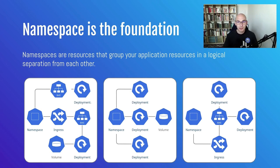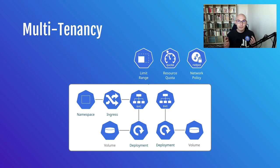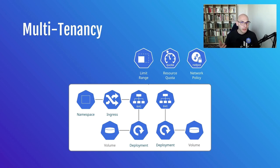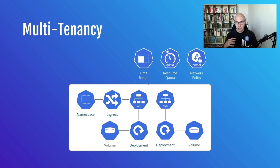We all know Kubernetes is great at crafting distributed systems and provides out of the box some resources that help you tackle the downsides of dealing with a multi-tenant environment. The resources I'm referring to are LimitRange, ResourceQuota, and the well-known NetworkPolicy. I'm not going to do a one-on-one introduction about these because documentation is there for that, but I'll provide a brief overview since with the combination of these resources you can achieve complex multi-tenant strategies.